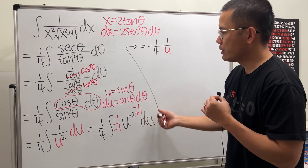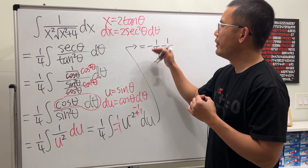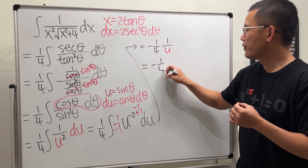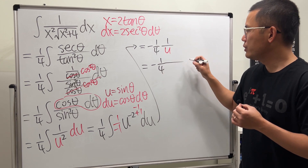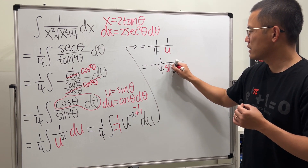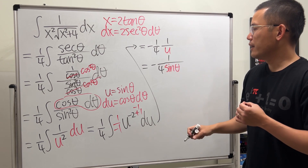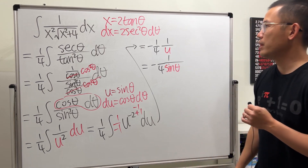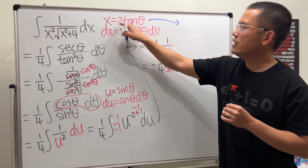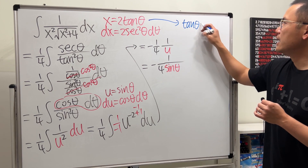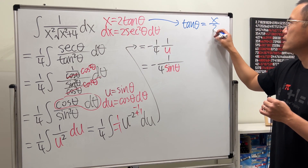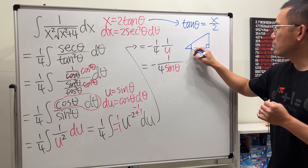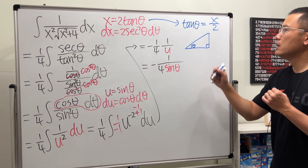Now we go back from u to theta, then to x. Since u equals sine theta, the expression is negative 1 over (4 sine theta). To go back to x, we use the triangle method. From x = 2 tan θ, divide both sides by 2 to get tan θ = x/2. Draw a right triangle with angle θ, opposite side x, and adjacent side 2.